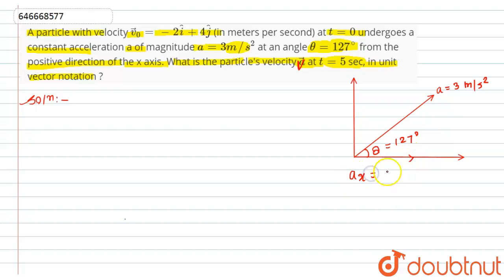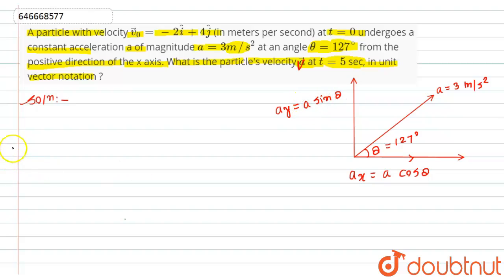From here, the horizontal component of acceleration will be aₓ = a·cosθ, and similarly the vertical component aᵧ = a·sinθ. So the horizontal component aₓ = 3·cos(127°), which equals -1.8 meters per second squared.